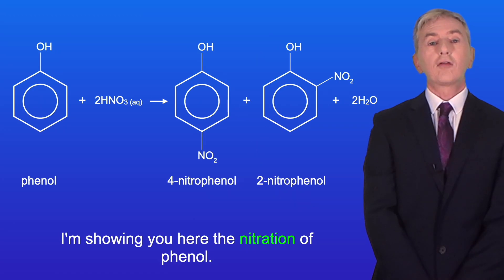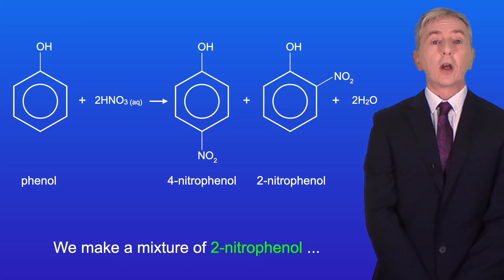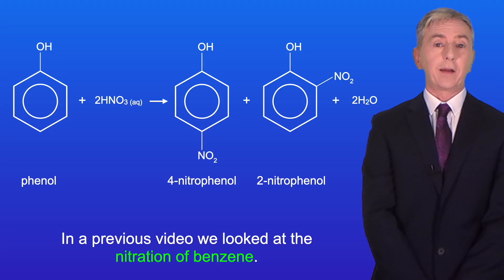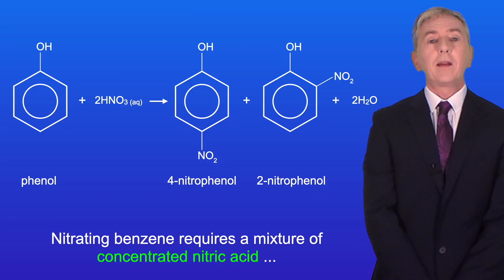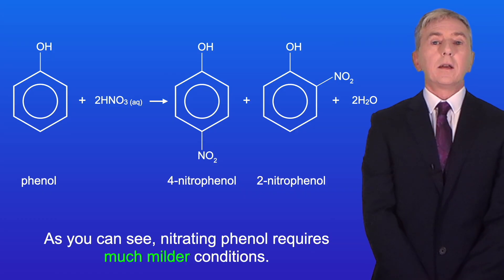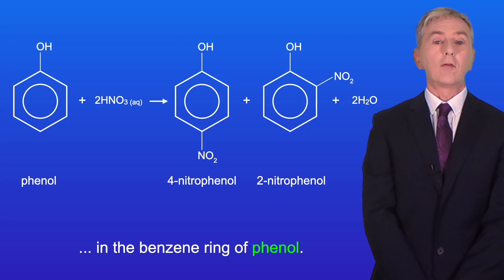Here I'm showing you the nitration of phenol. To nitrate phenol we use dilute nitric acid at room temperature, and we make a mixture of 2-nitrophenol and 4-nitrophenol. In a previous video we looked at the nitration of benzene, which requires a mixture of concentrated nitric acid and concentrated sulfuric acid at 50 degrees Celsius. So as you can see, nitrating phenol requires much milder conditions, and again that's due to the increased electron density in the benzene ring of phenol.